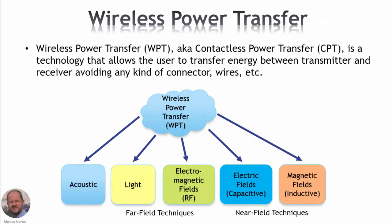So what is exactly wireless power transfer? Wireless power transfer, or WPT, also known as contactless power transfer, is a technology that allows the user to transfer energy between transmitter and receiver without any kind of connector, wires, and so on.